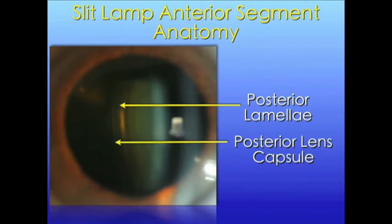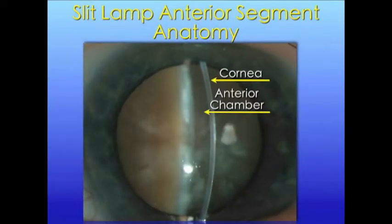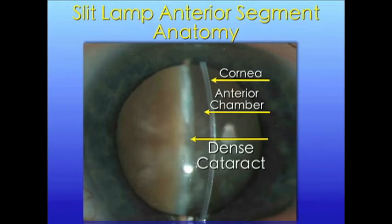Notice, when focused on the posterior parts of the lens, the cornea is out of focus. When a patient has cataracts, which is defined as any opacification of the lens, you will be able to see that. This is an example of a very dense, mature cataract. This is a corneal abrasion. The defect stains green with fluorescein as viewed with the cobalt blue filter.